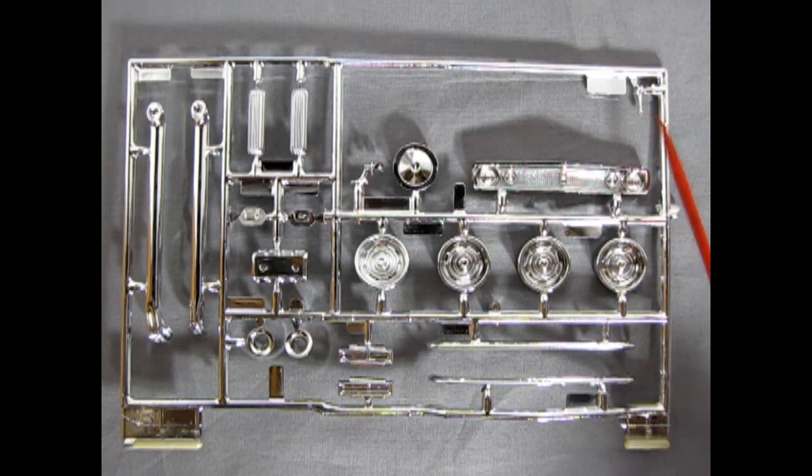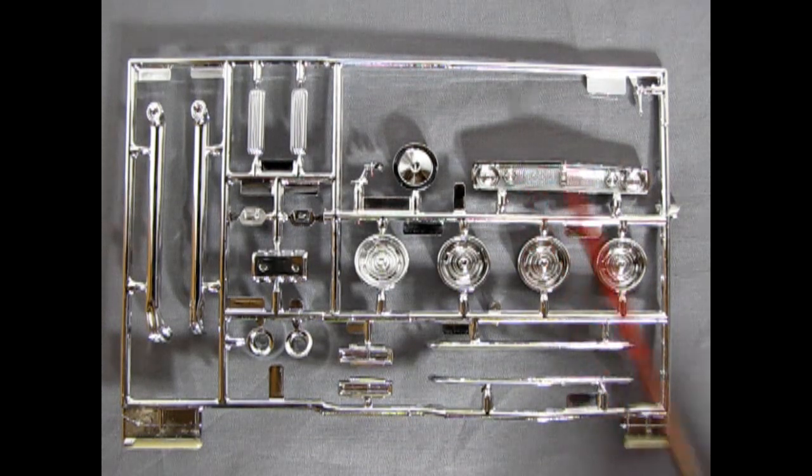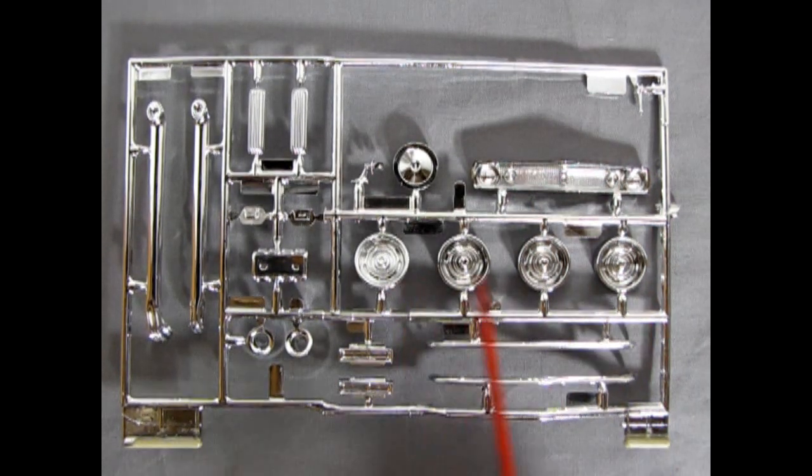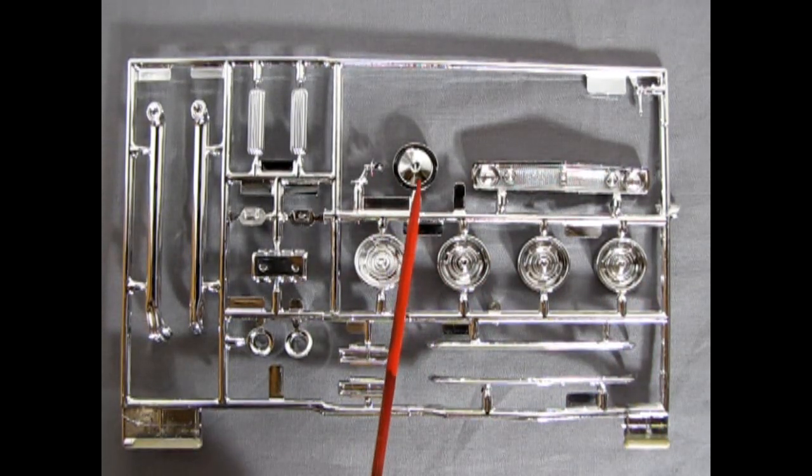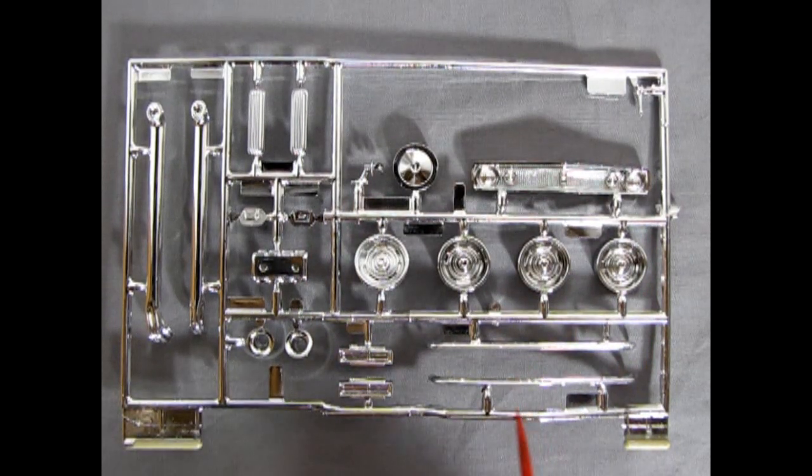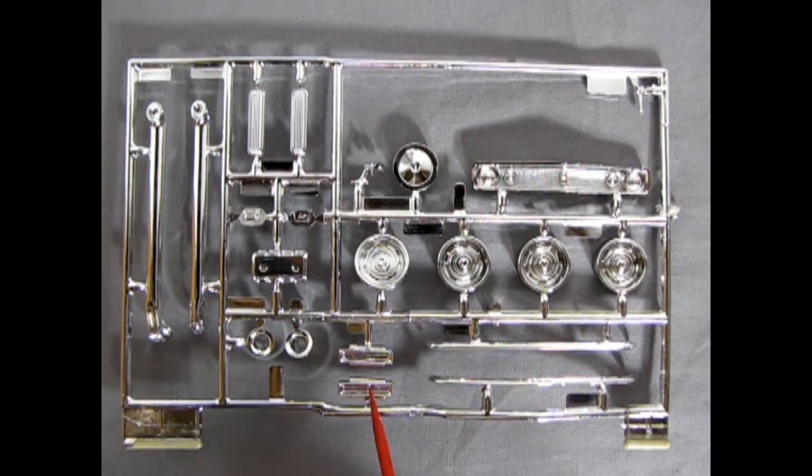You get the nice front grille with the correct round turn signal lamps. Then we have our four Rally SS type wheels, as well as chrome plated air cleaner, side view mirror, then our front and rear bumpers, which are very thin. These are your rear tail lights.